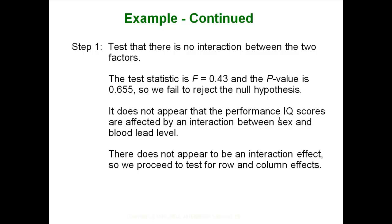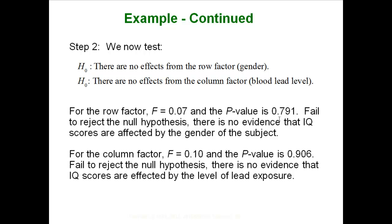What does that mean? We tested interaction first — there was none — so we move on to test the other two, running two different null hypotheses: no effects from the row, and no effects from the column. With a p-value of .79 we fail to reject, implying no row effects. There is not enough evidence to think gender has an effect. Similarly, testing the columns gave a p-value of .9 — also not enough evidence to support an effect from blood lead level.